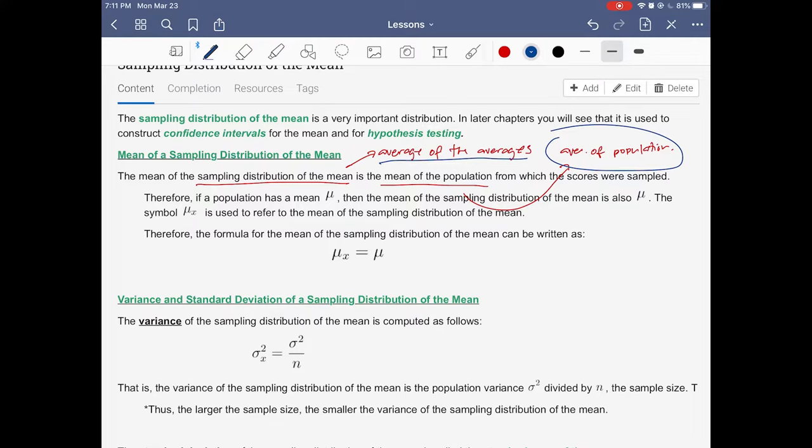In symbols, when we talk about sampling distribution, we talk about mu sub x-bar - mean of sample or sampling distribution. And this one, you're familiar with this, it's just the population mean.